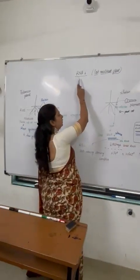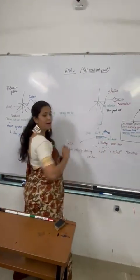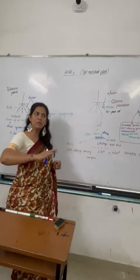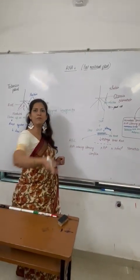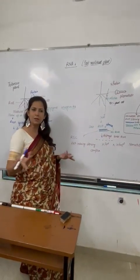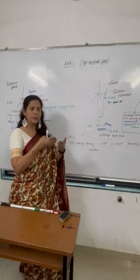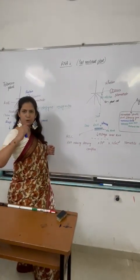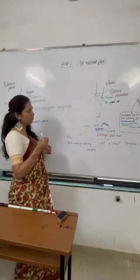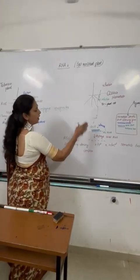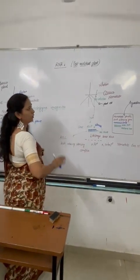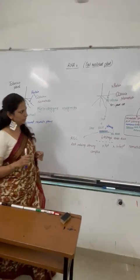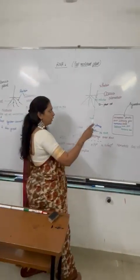This technique is RNA interference. What is the function of RNA? DNA makes RNA, and RNA makes protein — the central dogma of biochemistry. But in this case, this RNA does not create protein. Why not? Let us see what we are doing.